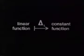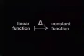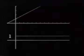So differencing a linear function gives us a constant function. Now we'll see how delta h operates on a quadratic function.